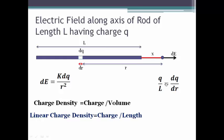Since we have assumed uniform charge distribution, therefore total charge upon total length will be equal to tiny charge upon tiny length. dq will be equal to q by L into dr. We will use this in the mathematical part of integration.